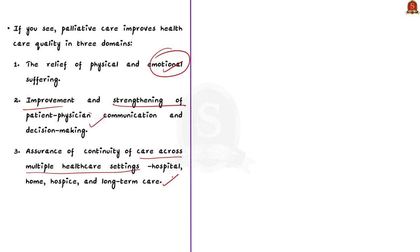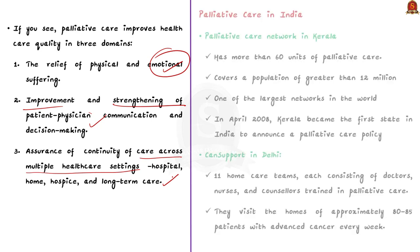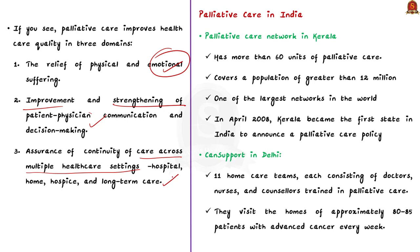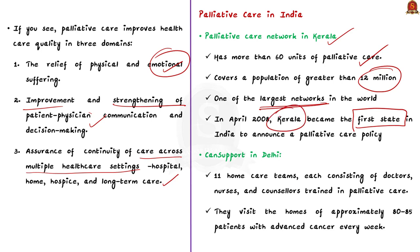India has been trying to focus on palliative care and pain management for over two decades. The Kerala palliative care network has more than 60 units and covers a population of greater than 12 million, making it one of the largest networks in the world. In April 2008, Kerala became the first state in India to announce a palliative care policy, leading from the front on this issue.